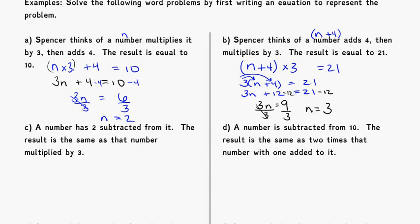Another example. A number has 2 subtracted from it. The number is N — we don't know what it is — and 2 is subtracted from it. The result is the same as that number multiplied by 3. So: N minus 2 equals N times 3, which we write as N minus 2 is equal to 3N.